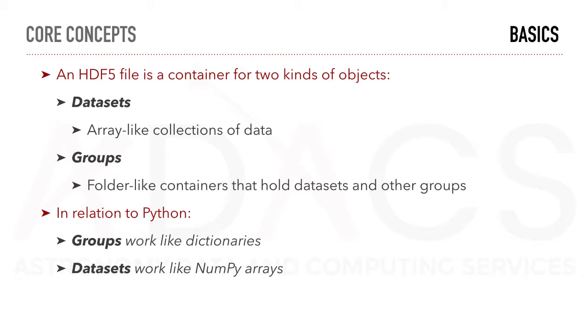As we can deduce from the example presented at the end of the previous section, an HDF5 file is a container for two kinds of objects: datasets, which are array-like collections of data, and groups, which are folder-like containers that hold datasets and other groups. In relation to Python, groups work like dictionaries and datasets work like NumPy arrays.